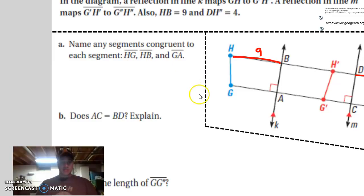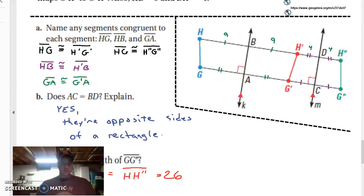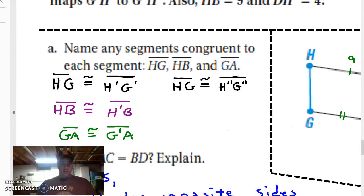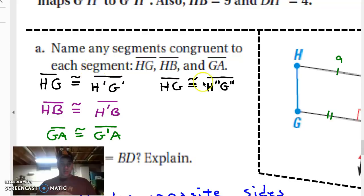This says, name any segments congruent to each segment HG, HB, and GA. Okay, so some things that I know are true about this would be this. HG is going to be congruent to H'G'. So HG is going to be congruent to H'G'. HG is also going to be congruent to H''G''. Okay, so those two things are going to be the same because we just reflected that original line segment.